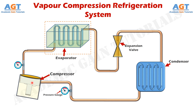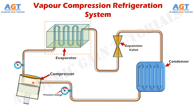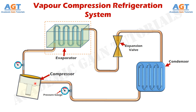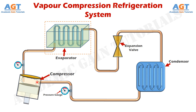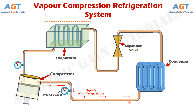First, the compressor starts working. Its job is to pressurize or compress the vapor refrigerant inside the compressor chamber. In the vapor compression refrigeration system, we commonly use either ammonia or Freon as the heat-carrying medium. We know that when pressure increases, temperature also increases. So, when the vapor refrigerant is compressed inside the compressor chamber by squeezing the vapor tightly together, it heats up. This high pressure and high temperature vapor refrigerant then leaves the compressor and enters the condenser through the connected pipe.